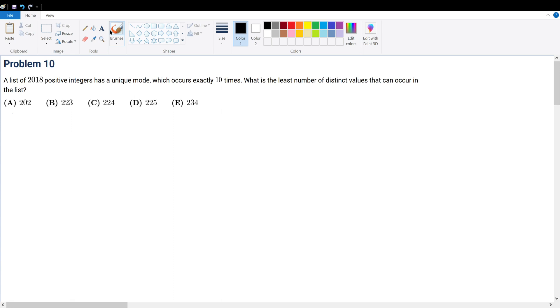Problem 10. A list of 2018 positive integers has a unique mode, which occurs exactly 10 times. What is the least number of distinct values that can occur in the list?